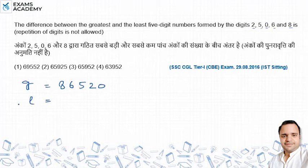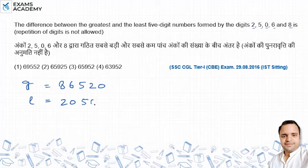Now, if we find out the least value — if we use 0 first, then it becomes a 4-digit number. So, we place 2 first, then 0, then 5, then 6, then 8.